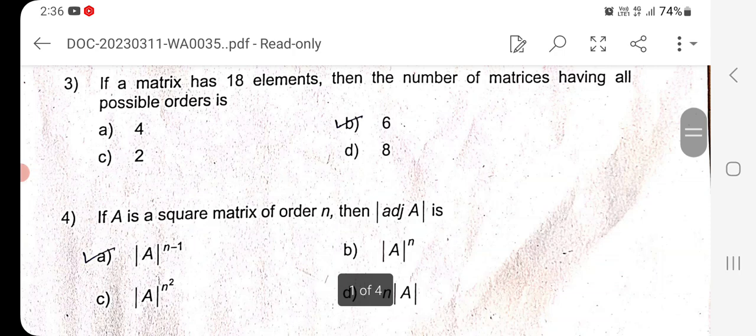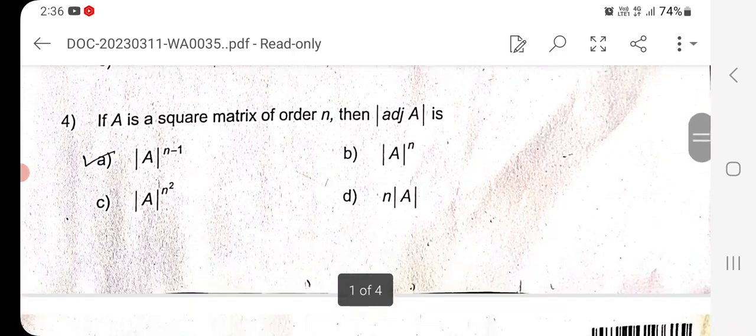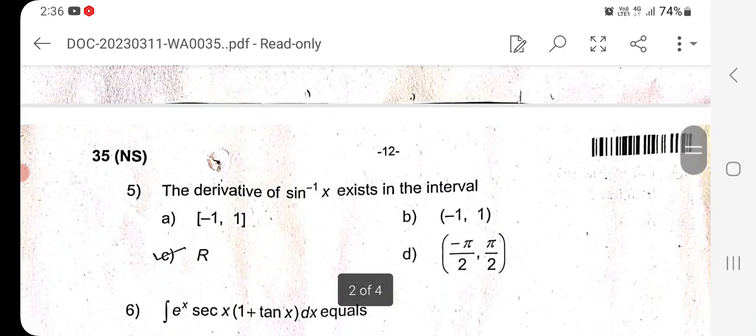Question 4: If A is a square matrix of order N, then the determinant of adjoint of A is option A, the right answer: determinant of A to the power N minus 1. Question 5: The derivative of sin inverse of X exists in the interval set of all real numbers.